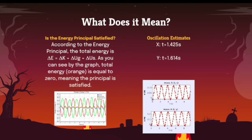What does it mean? Is the energy principle satisfied? According to the energy principle, the total energy is ΔE = ΔK + ΔUg + ΔUs. As you can see by the graph, the total energy, signified by the orange line, is equal to zero, meaning the principle is satisfied in that the energies cancel themselves out, also meaning energy is conserved.